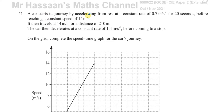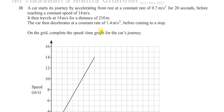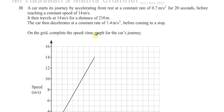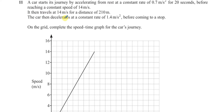This question is about a speed-time graph. The car starts its journey by accelerating from rest at a constant rate of 0.7 meters per second squared for 20 seconds, reaching a constant speed of 14 meters per second. That's shown on the graph — it starts from rest and reaches 14 m/s in 20 seconds, which is essentially part (a), already drawn.